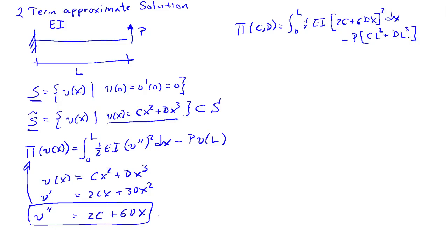Pi needs to be stationary, so the derivative of pi with respect to C needs to equal zero. That's the integral of EI times 2C plus 6dx times 2dx minus P L squared, which equals zero.